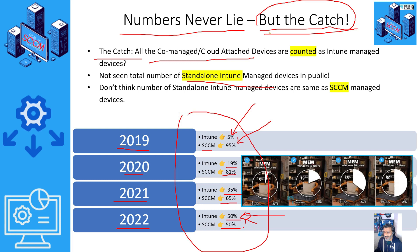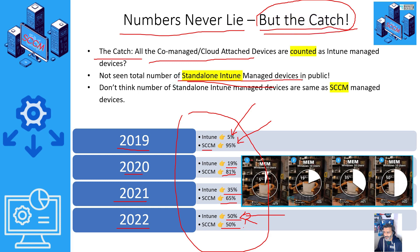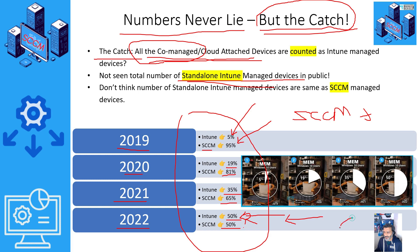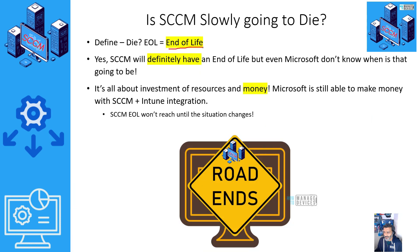That is the catch. These numbers were published by Microsoft a few years back, but they have not released any numbers specifically for standalone Intune managed devices. They have confirmed that co-managed and cloud-attached devices are also counted as Intune managed devices. For co-managed devices, that is true — they are managed by both SSCM and Intune. In my opinion, standalone Intune managed devices are less than 50%, meaning most devices are still managed by SSCM.